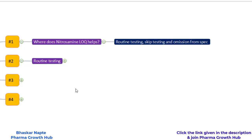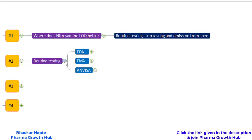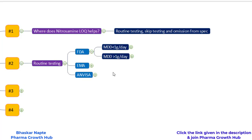Because these limits are so low, the sensitivity of the analytical method is of paramount importance when it comes to nitrosamines. When qualifying your batch product with respect to nitrosamine content, you must understand your method's sensitivity requirements. I am going to talk about three important regulators: FDA, EMA, and NVSA.